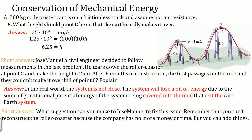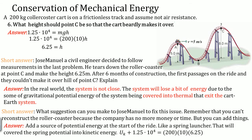What suggestion can you make to Jose Manuel to fix this? You can't reconstruct the roller coaster, but you can add things. You can't add a rocket — there's no engine source — but there is one more source of mechanical energy you can add: a spring launcher. At the start of the ride, you can add a spring that will shoot the cart forward. A spring launcher will convert spring potential energy into additional kinetic energy, giving the system more than just 1.25 × 10⁴ joules of energy.